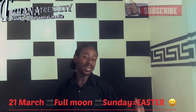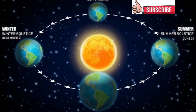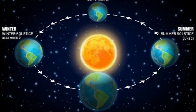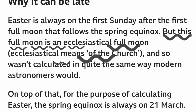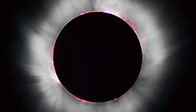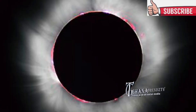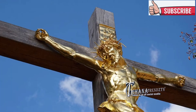Easter keeps on changing because the March 21st ecclesiastical spring equinox is not the same as the astronomical spring equinox. Due to astronomy, things keep changing — sometimes we have short days, long nights, eclipses, leap years. That makes the full moon that falls after March 21st keep changing, which is why Easter keeps on changing.